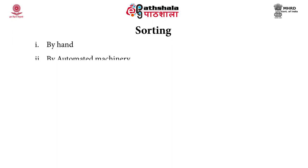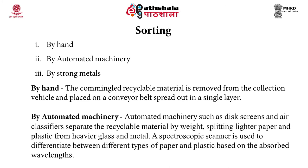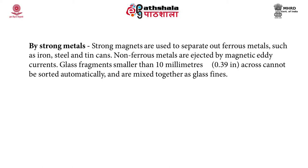The second step in recycling is sorting. Sorting can be done manually by hand, or using automated machinery or strong magnets. Co-mingled recyclable materials are removed from the collection vehicle, spread on a conveyor belt, and sorted manually. Automated machinery like disc screens and air classifiers separate recyclable materials by weight — splitting lighter paper and plastic from heavier glass and metal. Spectroscopic scanners can also differentiate between different types of paper and plastic based on absorbed wavelengths.